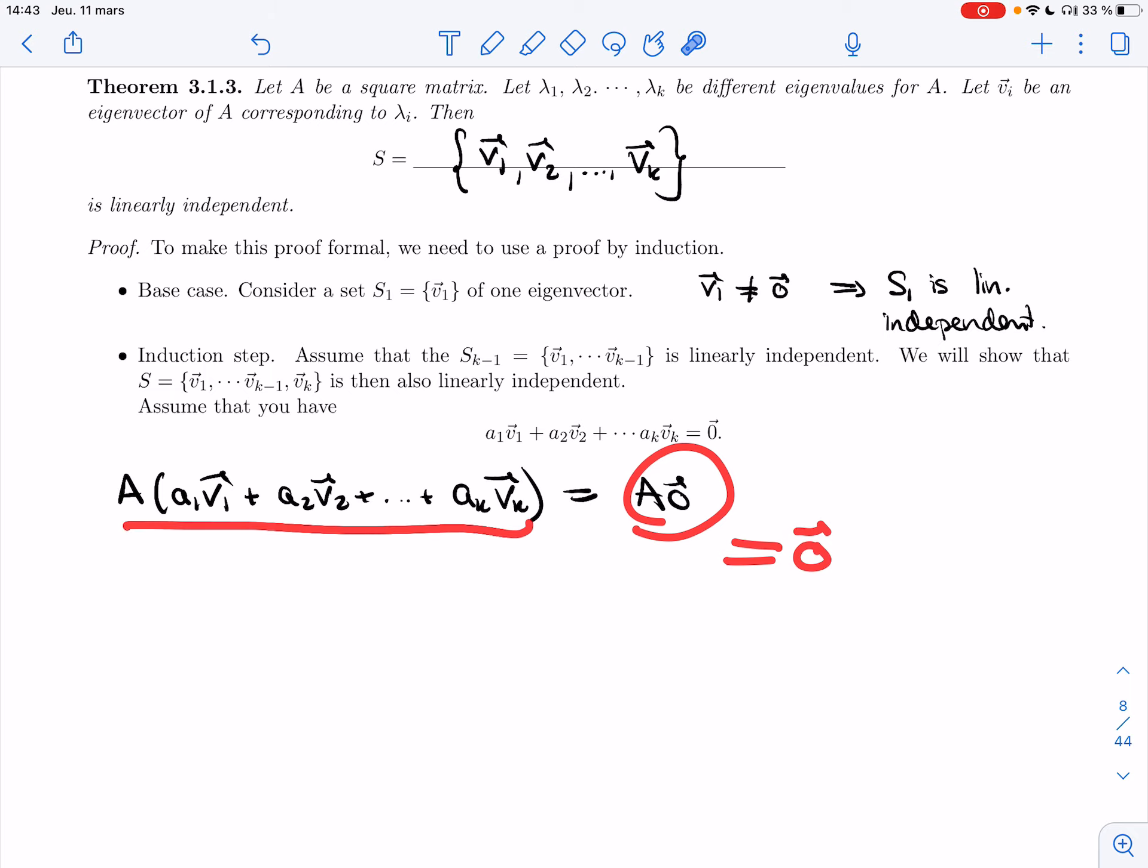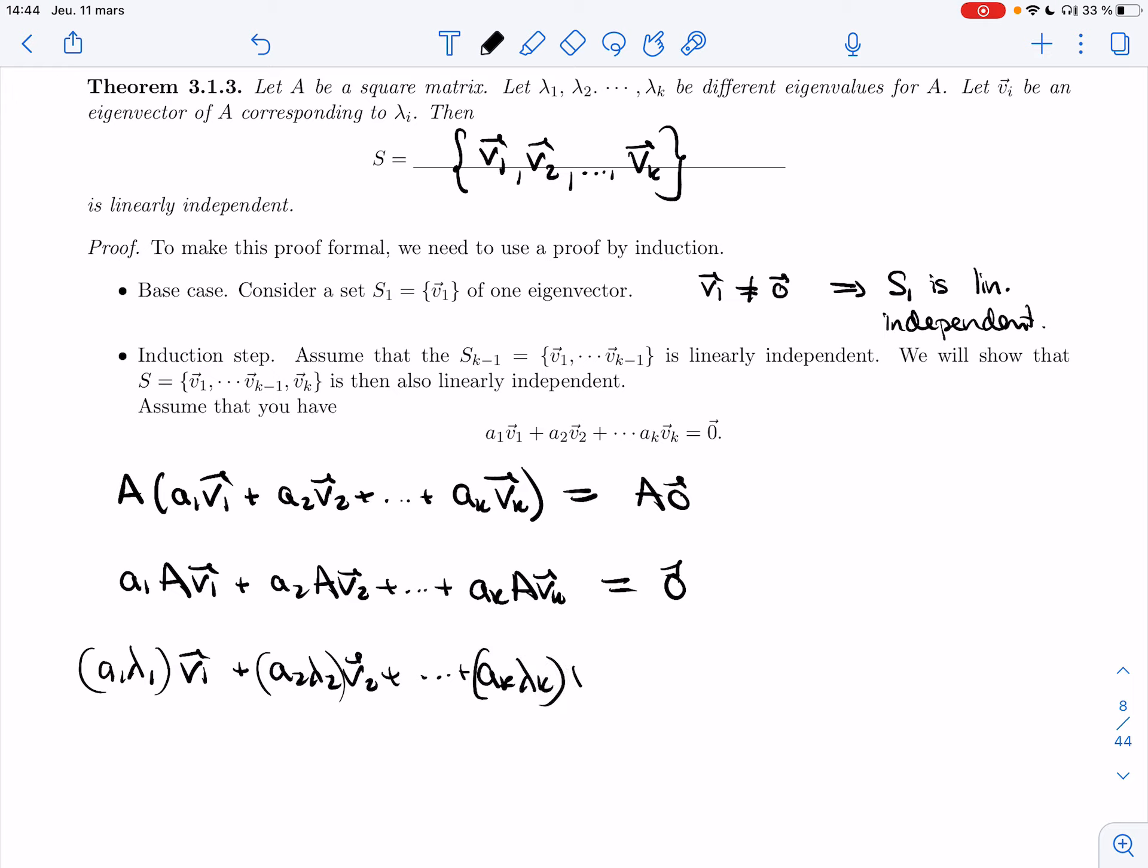So this side is pretty simple. It's going to give me zero. That side is way more interesting. I'm going to get A times different eigenvalues, vectors. And so I'm going to get their eigenvalues coming in. So here the first one will be a_1 lambda_1 v_1. Then I'm going to get a_2 lambda_2 v_2. And a_k lambda_k v_k. And that's zero.